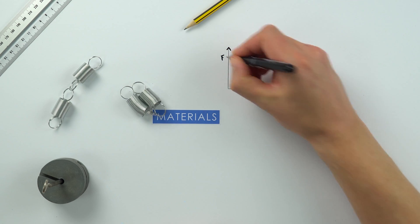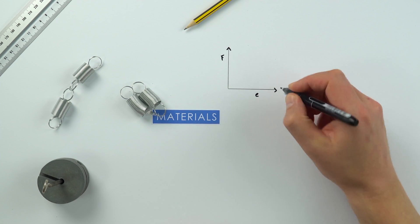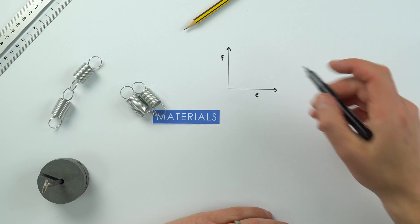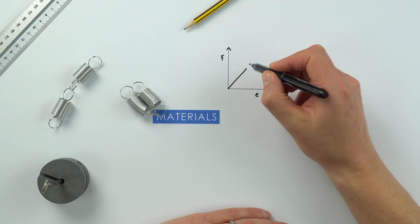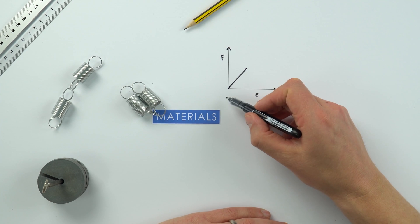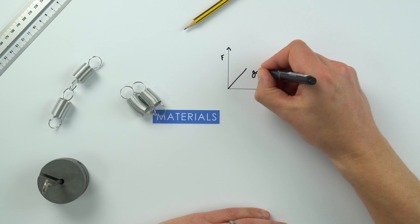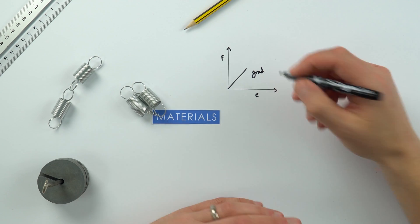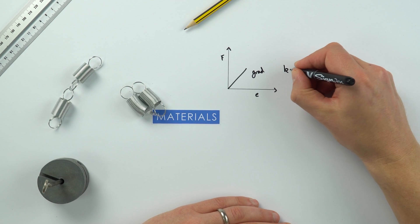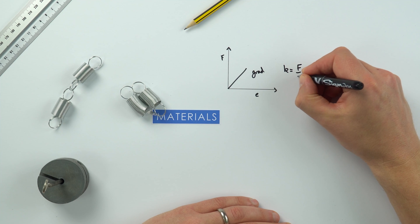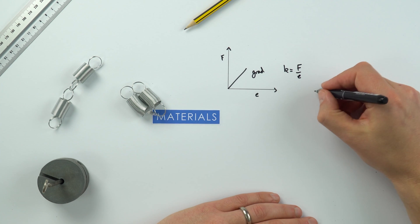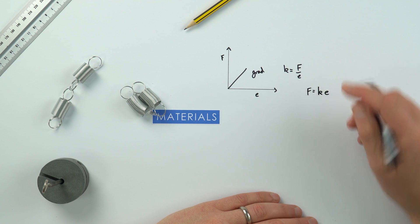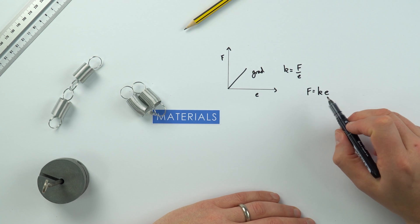At GCSE you'll have looked at Hooke's law. Here we have the force on one axis and the extension on the other — sometimes we use x, sometimes delta L for that extension. We get a straight line through the origin, and the gradient of that line is the spring constant K, which is F divided by e, because the force equals Ke. The force is proportional to the extension.